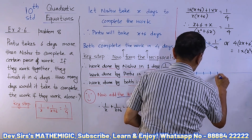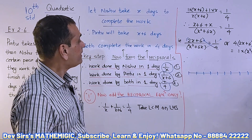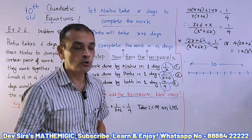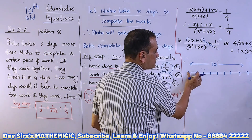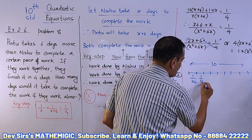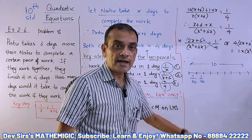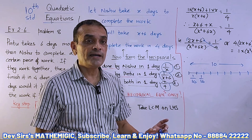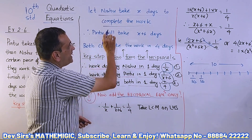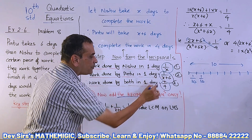If Nishu takes 10 days, then in one day he will do one-tenth of the work. In two days he will do one-tenth plus one-tenth, and so on. That is the logic behind this problem. So: if Nishu takes 10 days to complete the work, work done by Nishu in one day is 1/10. In the same way, if Nishu takes x days, work done by Nishu in one day is 1/x. Similarly, work done by Pintu in one day is 1/(x+6).